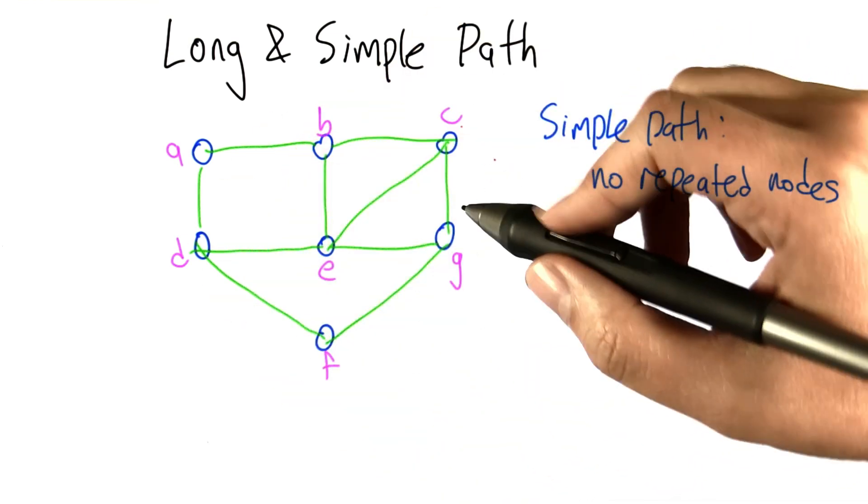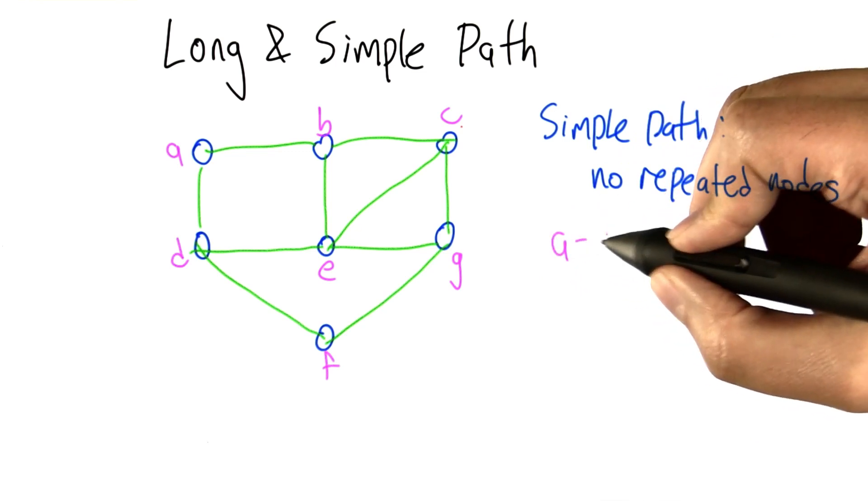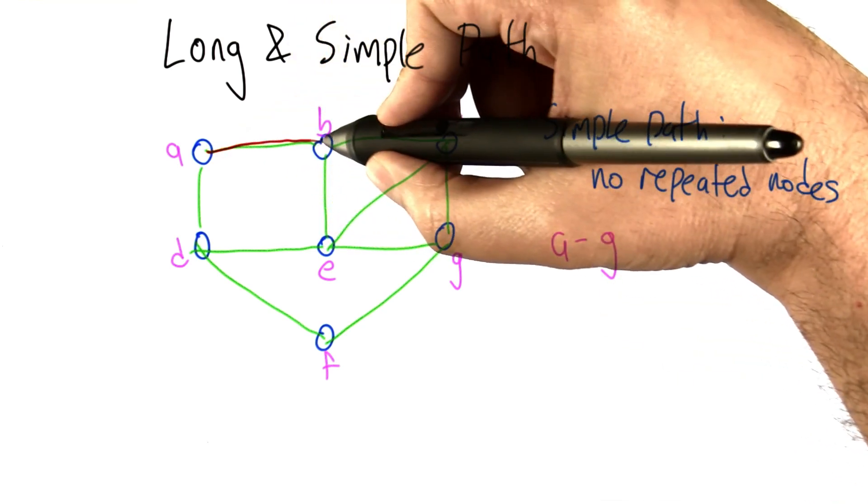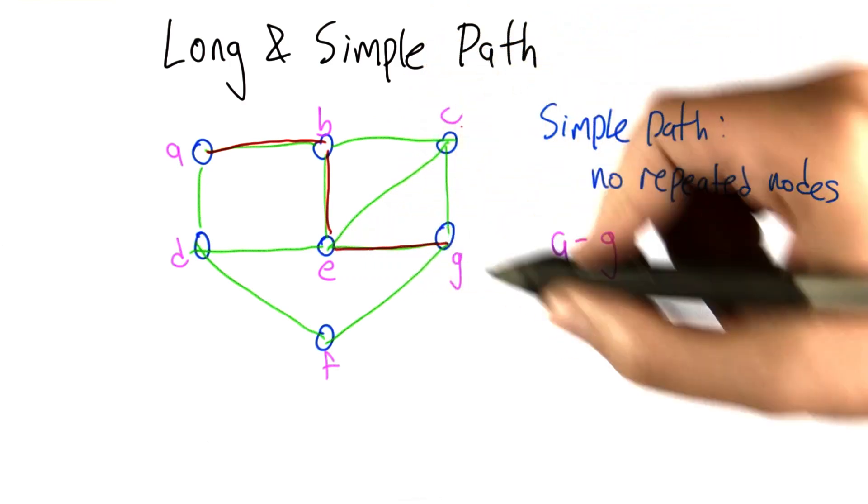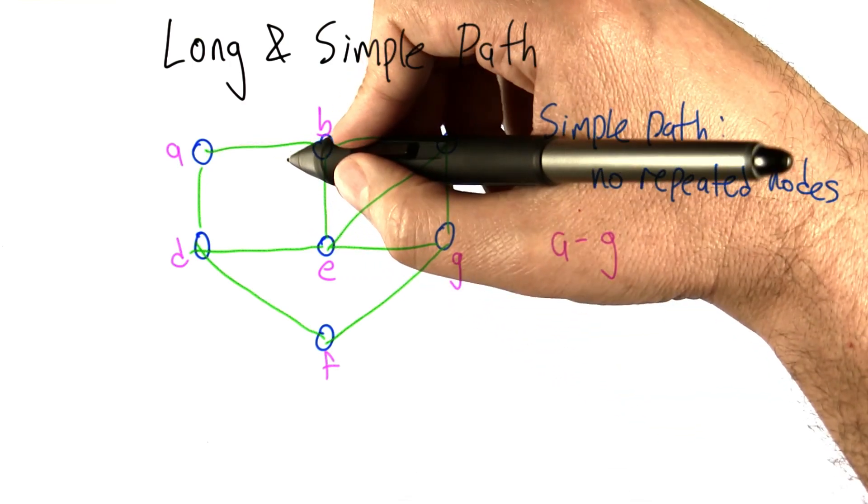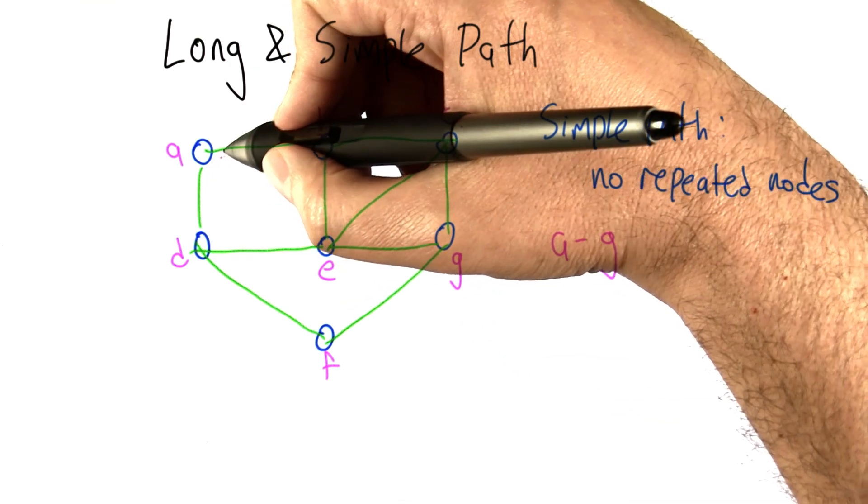We've been talking about things like shortest paths. So let's look at a path from A to G. Here's a natural path to choose. It's one of the shortest paths from A to G. But it's by no means the only path from A to G. So here's another path from A to G.